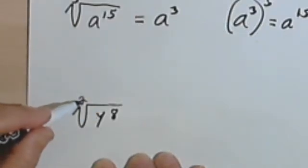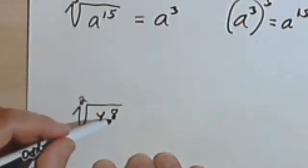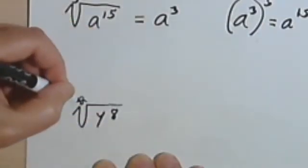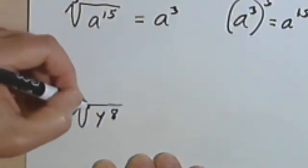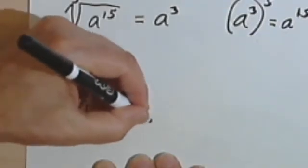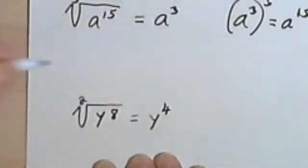So to solve this, I'm going to divide the index into the exponent that I have under the radical sign. So I'm dividing 2 into 8. 8 divided by 2 is 4. So the answer to this would be y to the fourth.